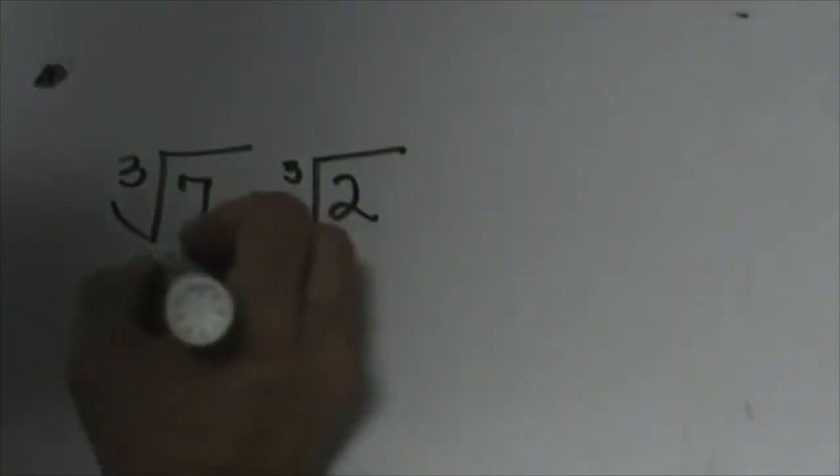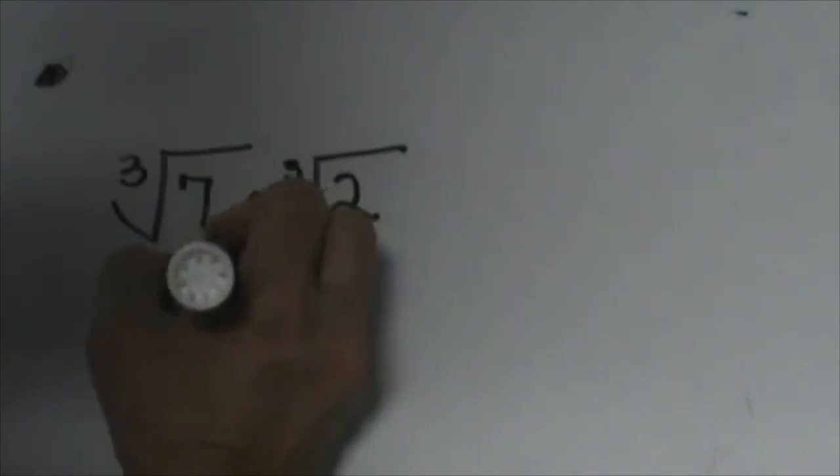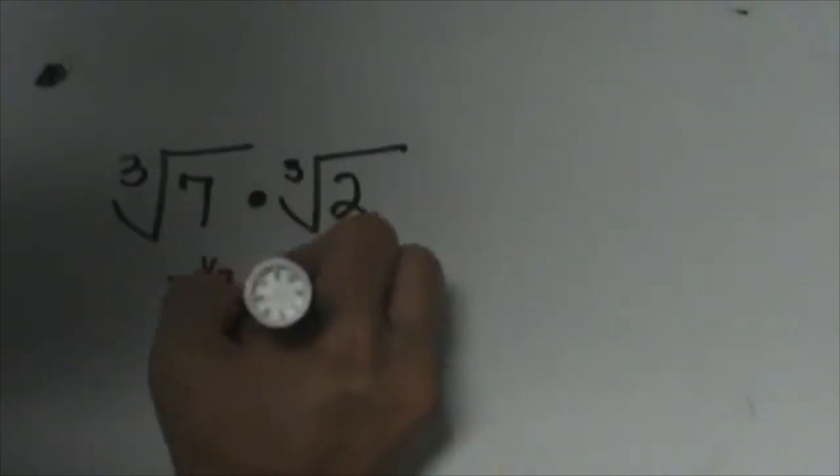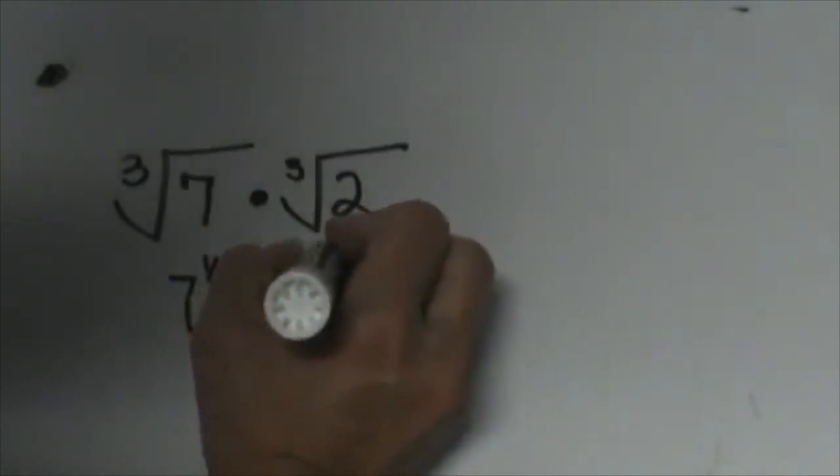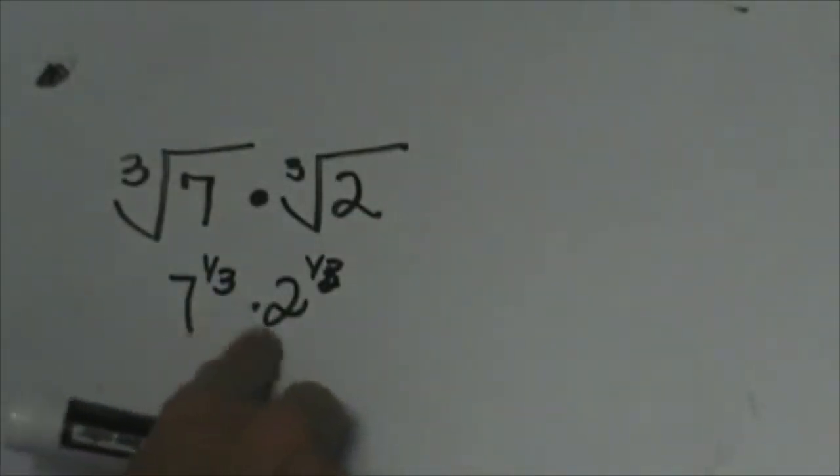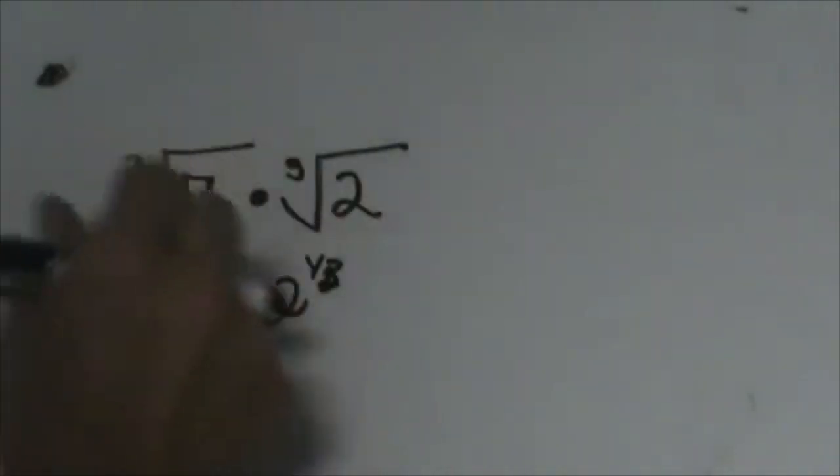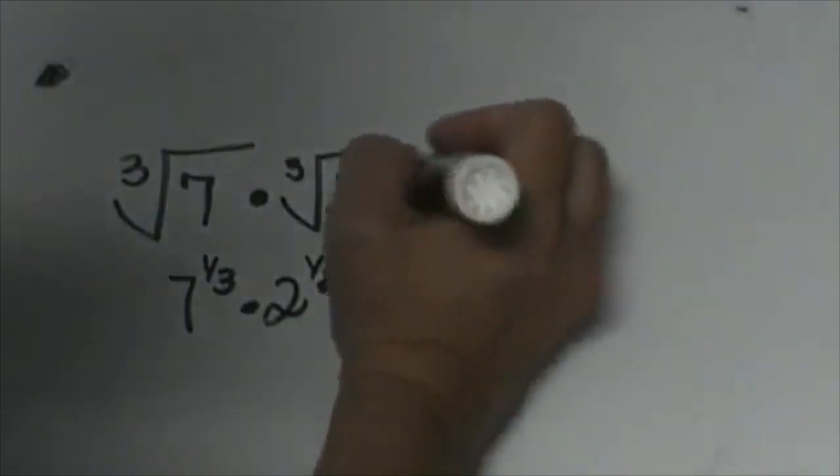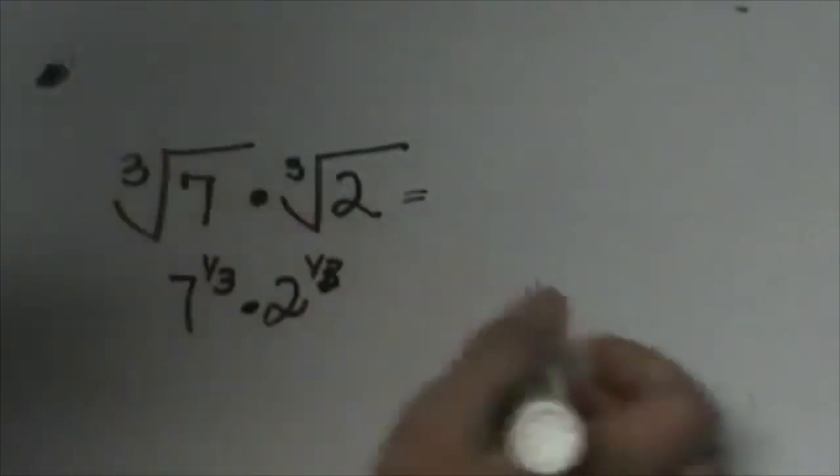Now these cube roots also mean 7 to the 1/3 and 2 to the 1/3. We can't combine those because they have different bases, but we can put them together under one radical because they are both cube roots.